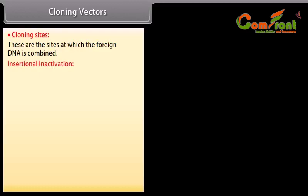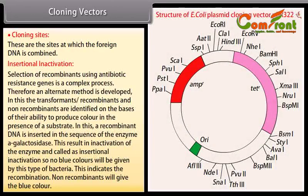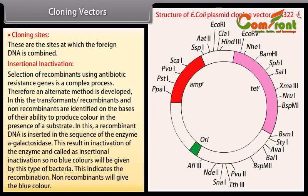Insertional inactivation. Selection of recombinants using antibiotic resistance genes is a complex process. Therefore, an alternate method has been developed. In this method, transformants, recombinants, and non-recombinants are identified on the basis of their ability to produce color in the presence of a substrate. A recombinant DNA is inserted in the sequence of the enzyme beta-galactosidase, resulting in inactivation of the enzyme — called insertional inactivation — so no blue color is produced by this type of bacteria, indicating recombination. Non-recombinants will give blue color.